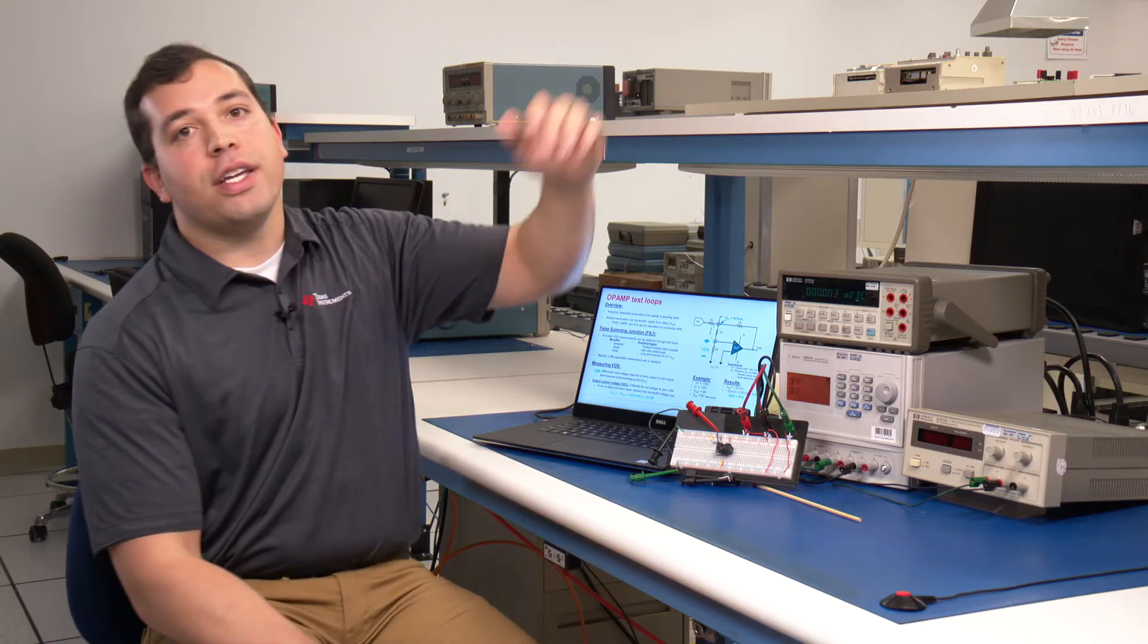There are various datasheet parameters of an amplifier which can be verified. To make this process more efficient, there are test loops we can utilize to test amplifier datasheet conditions. An example of a test loop that we'll utilize in this training is the false summing junction.